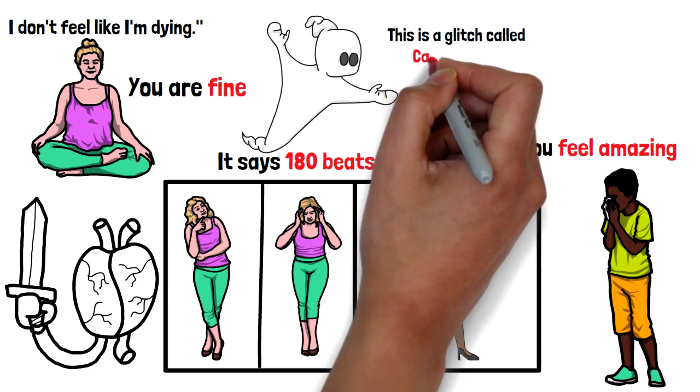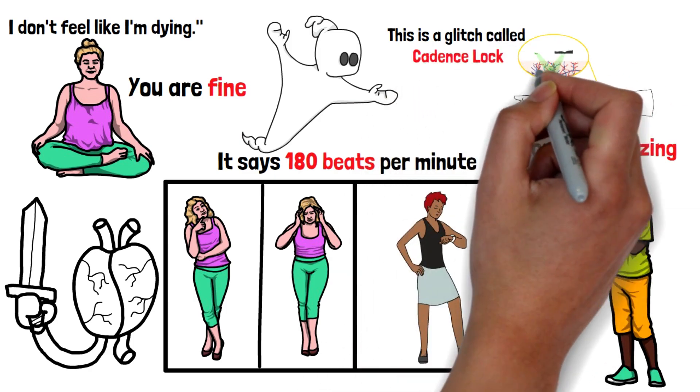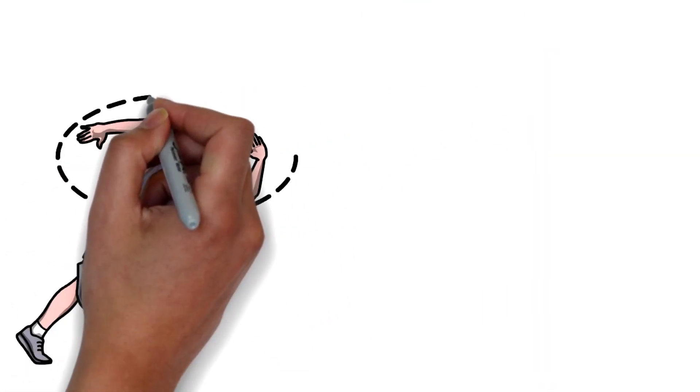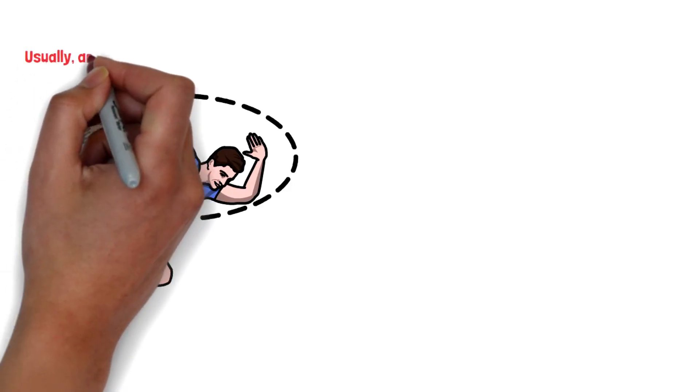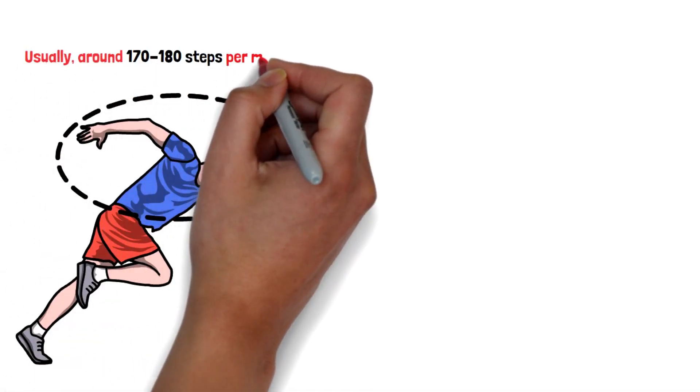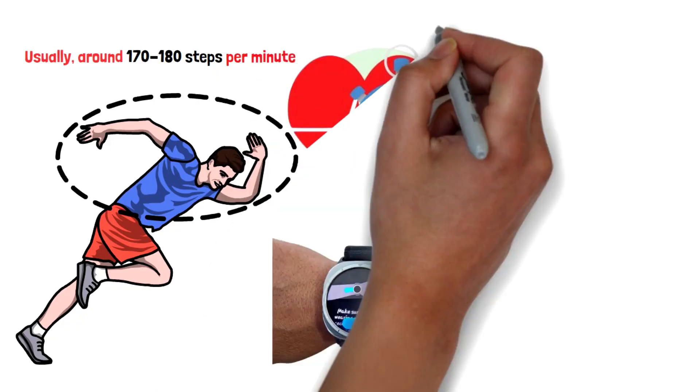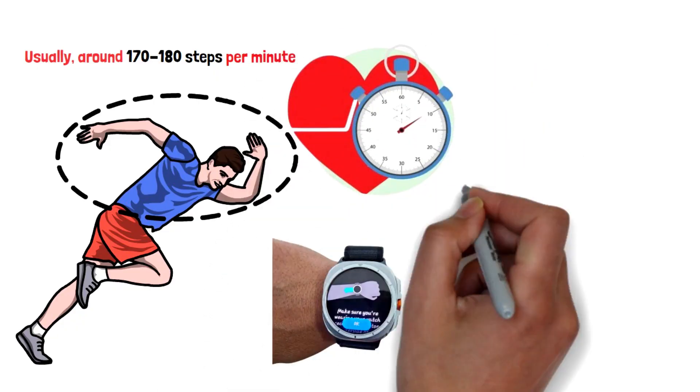This is a glitch called cadence lock. Your watch uses light photoplethysmography to measure blood flow, but when you run, your arm swings rhythmically, usually around 170 to 180 steps per minute. If the watch is slightly loose, the sensor gets confused. It stops measuring your heart and starts measuring the impact of your feet. It locks onto your cadence.